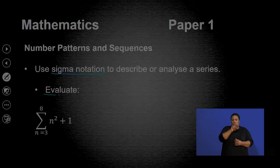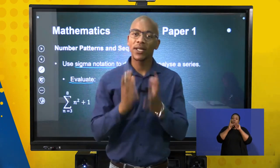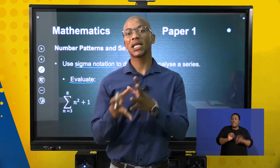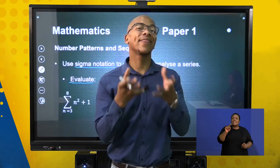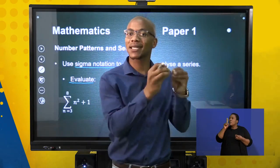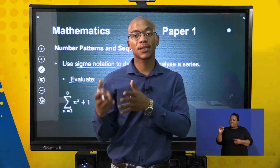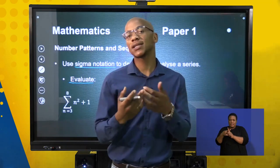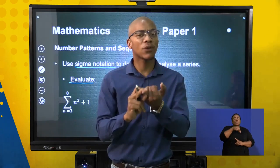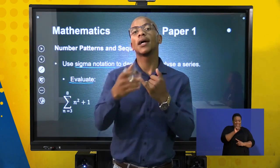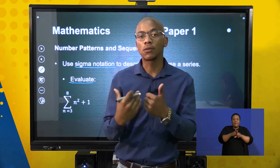The question says evaluate. When a question says evaluate, you need to identify the concept. Here they're saying evaluate a sigma of something — what that means is you need to add, because that's what sigma means. You will need to first expand the sequence. You can already see the sequence is n squared plus 1, which makes it a quadratic pattern. There is no straight formula to find the sum of quadratic patterns, so you need to expand all the terms and add them manually.